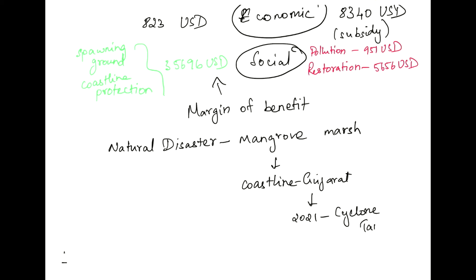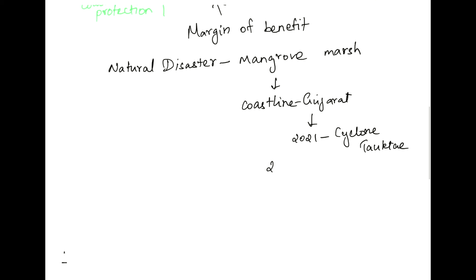And Cyclone Tauktae cost around $2.1 billion USD loss of material and 200 lives of people including missing.